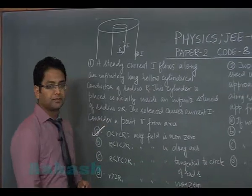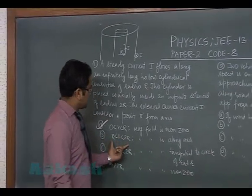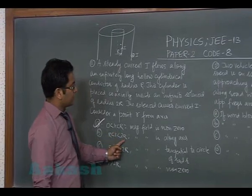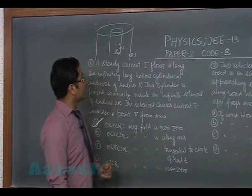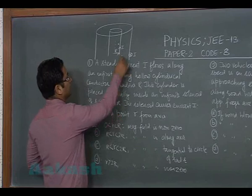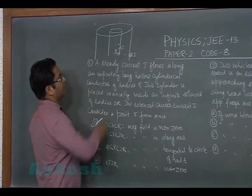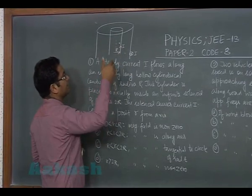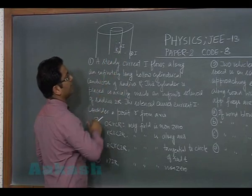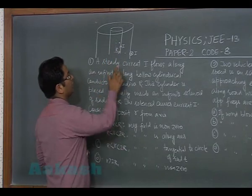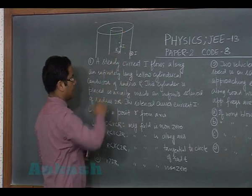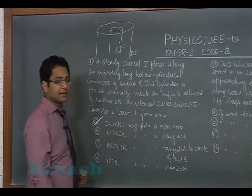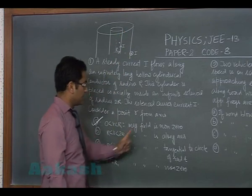In the region between greater than r and less than 2r, the statement that magnetic field is along the axis would be false because here the magnetic field due to the cylinder would be inside and the magnetic field due to the solenoid will be up, so the resultant would not be along the axis.